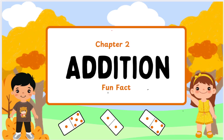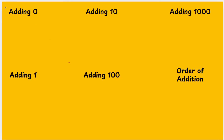Let's move on to the next topic which is the fun fact. So, the first fact is adding 0. I will give you an example for each, so just note it down in your notebook. I usually tell you in every part of addition: if you add any number with 0, you will get the same number as an answer. This is the adding with 0 fact.